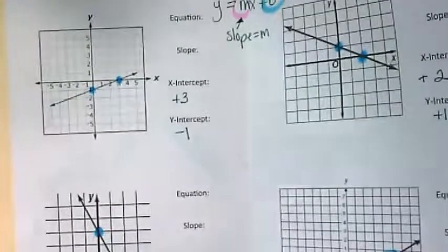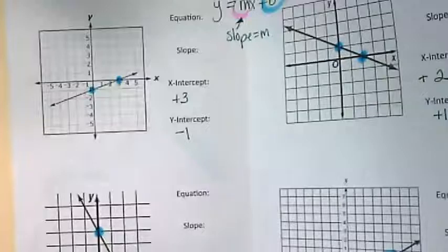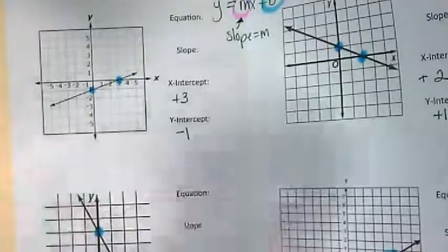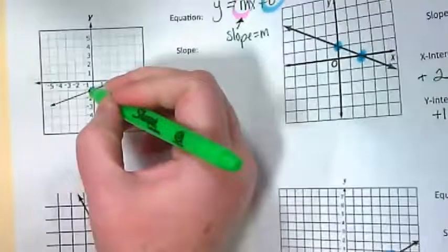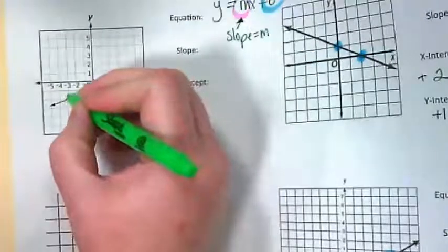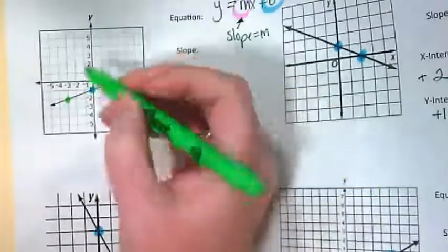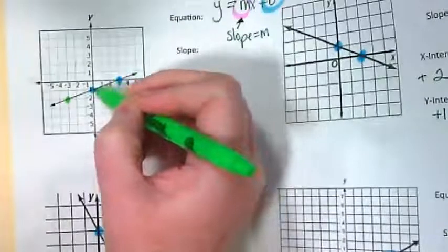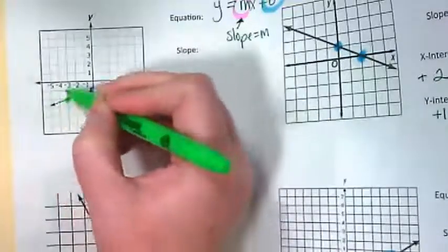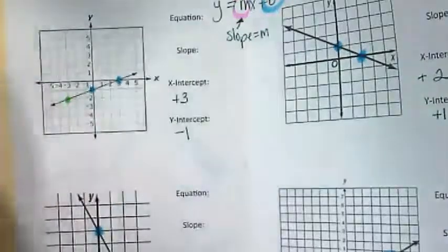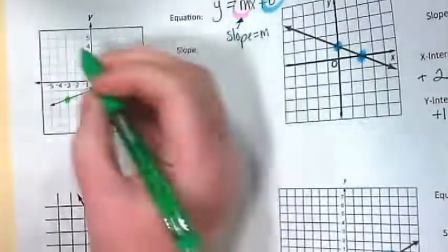So to find our slope, we have to find points on the graph. We already have these two points. I also see this one here. It has to be places where the line crosses exactly through points like this. Kind of think of it like a bullseye.